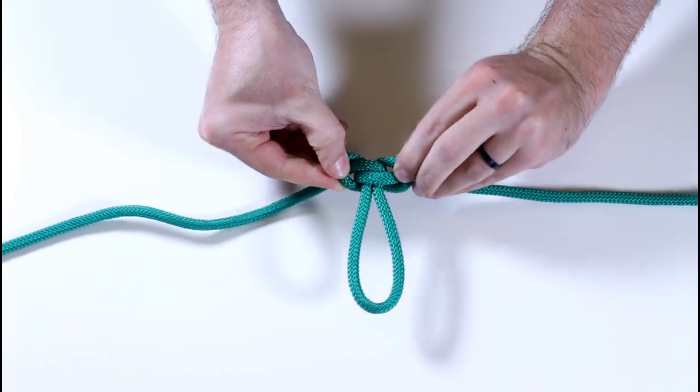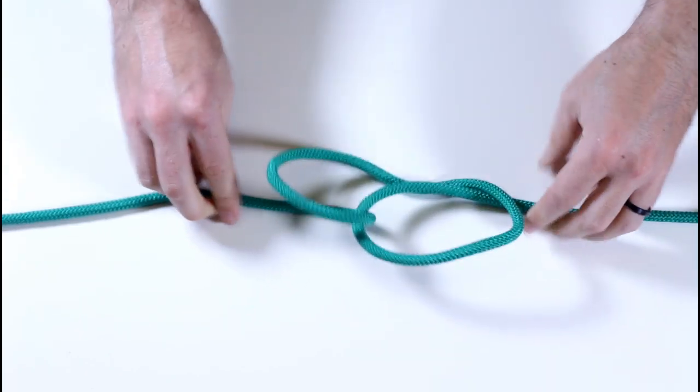To undo it, just like the zeppelin bend, pull the nubbins away from each other and the thing should fall apart fairly easily.